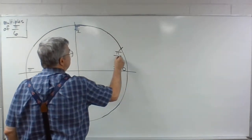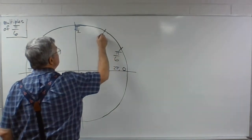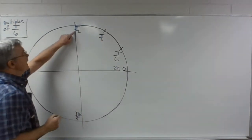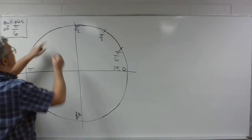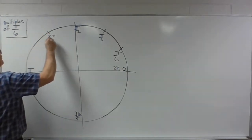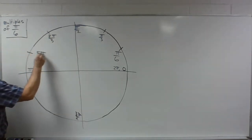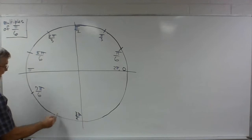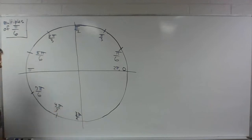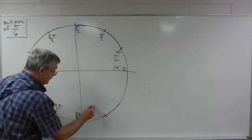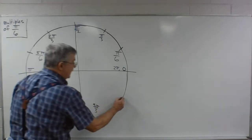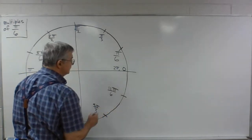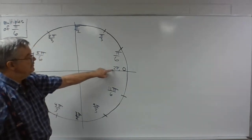We have pi over 6, 2 pi over 6 which is pi over 3, 3 pi over 6 which is pi over 2, 4 pi over 6 which is 2 pi over 3, 5 pi over 6 which doesn't reduce, 6 pi over 6 which is pi, 7 pi over 6 which doesn't reduce, 8 pi over 6 which is 4 pi over 3, 9 pi over 6 which is 3 pi over 2, 10 pi over 6 which is 5 pi over 3, 11 pi over 6 which doesn't reduce, and finally 12 pi over 6 which is the same as 2 pi.